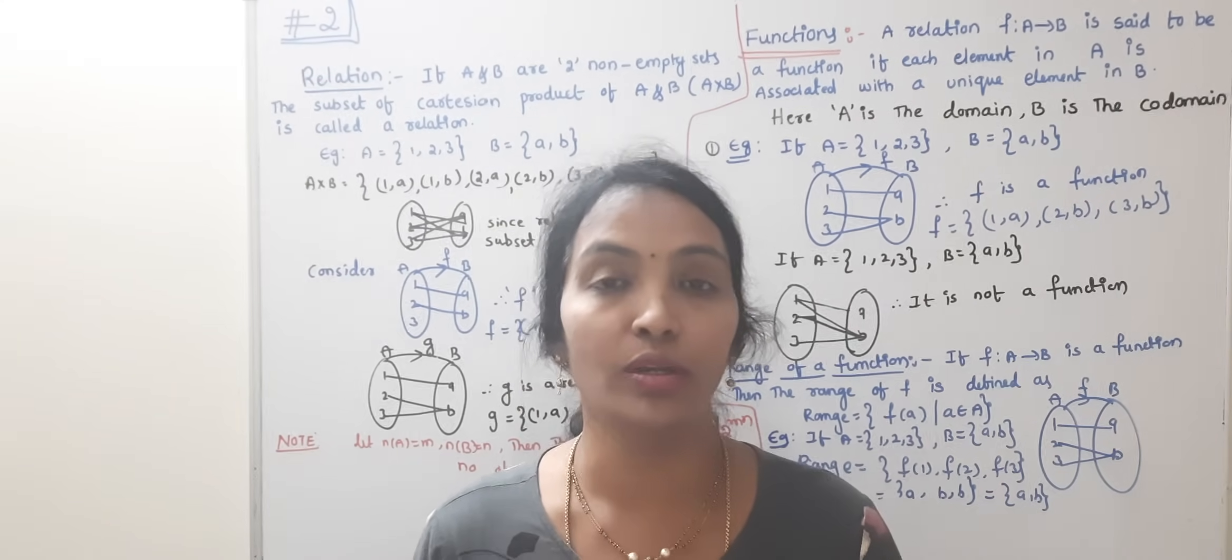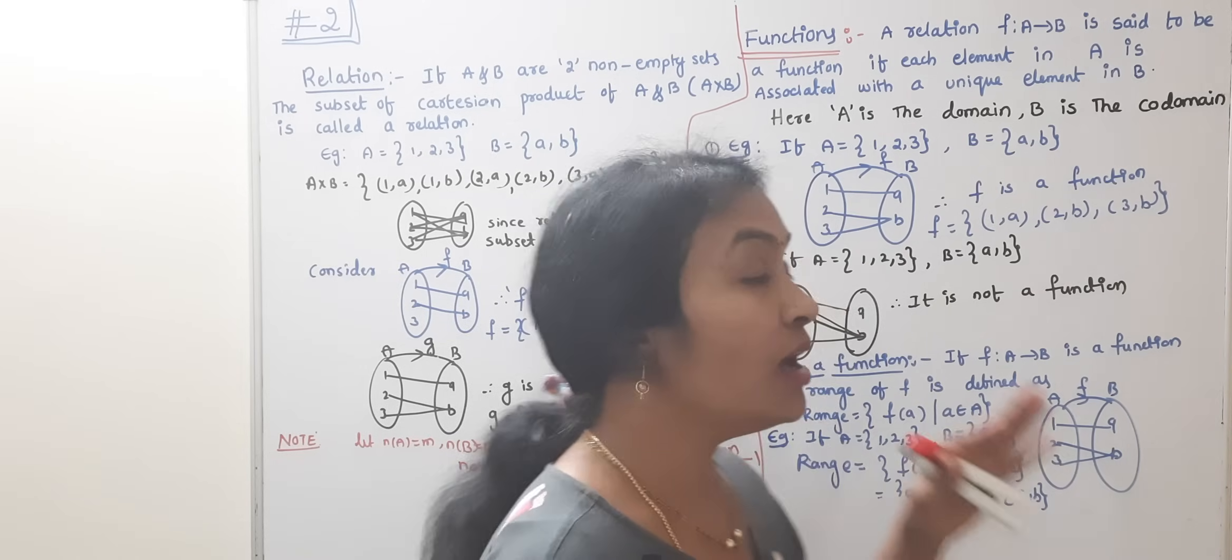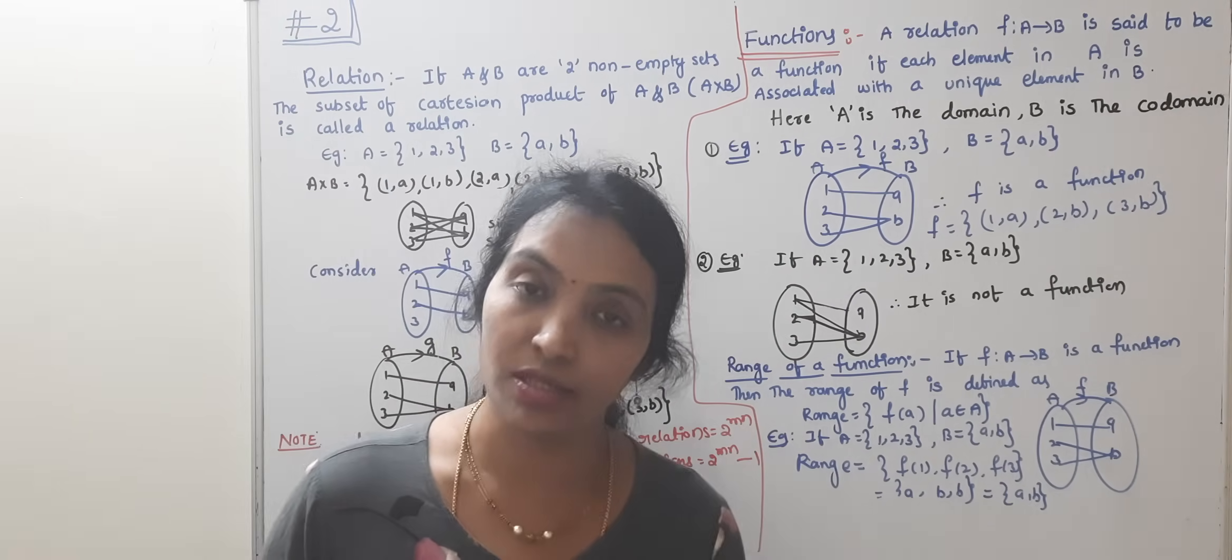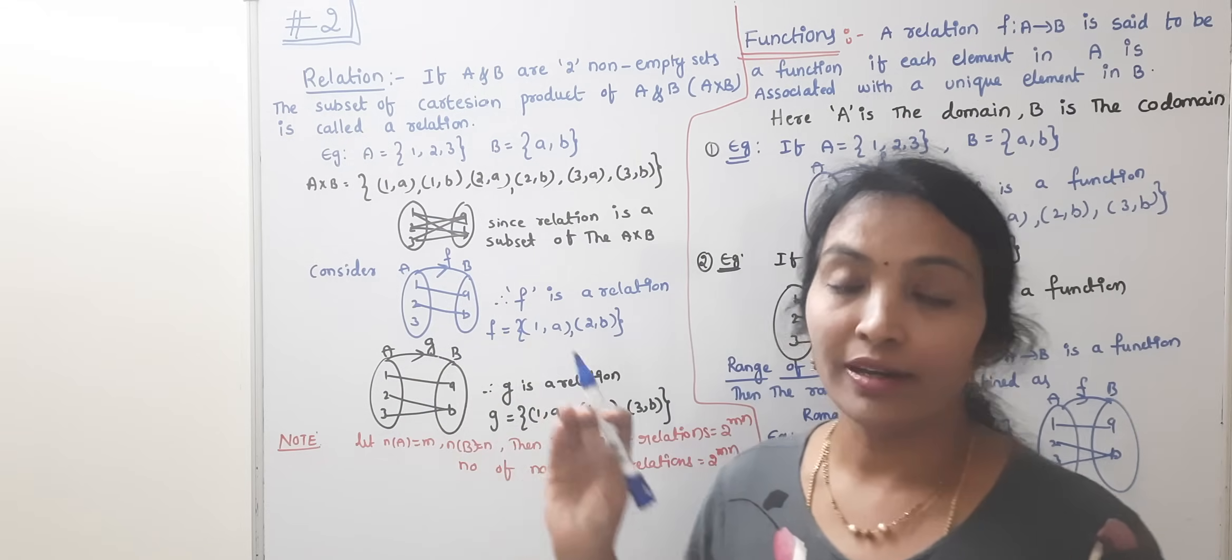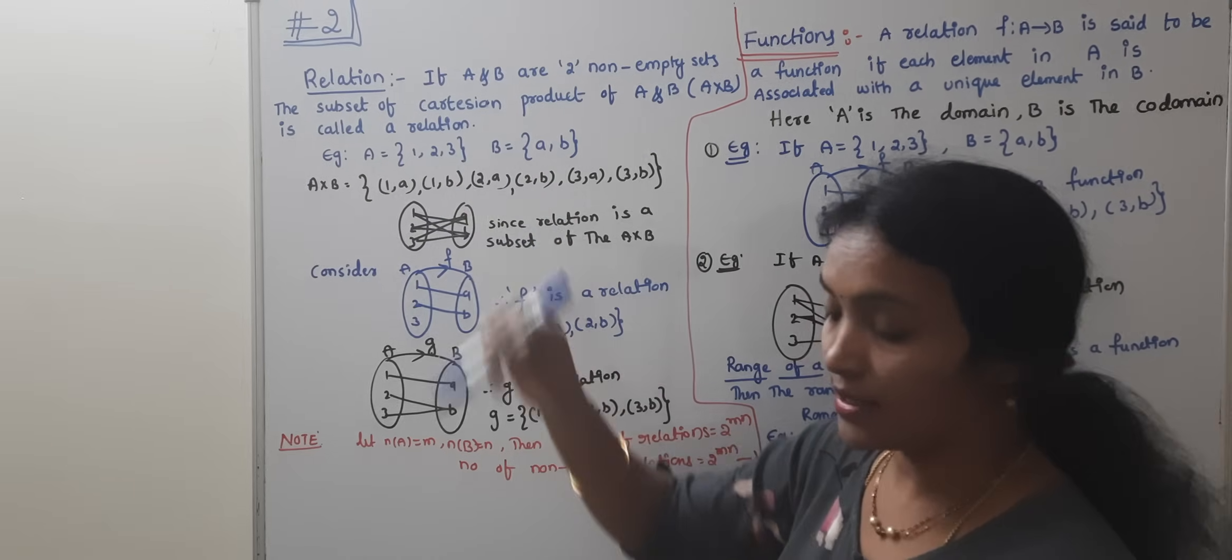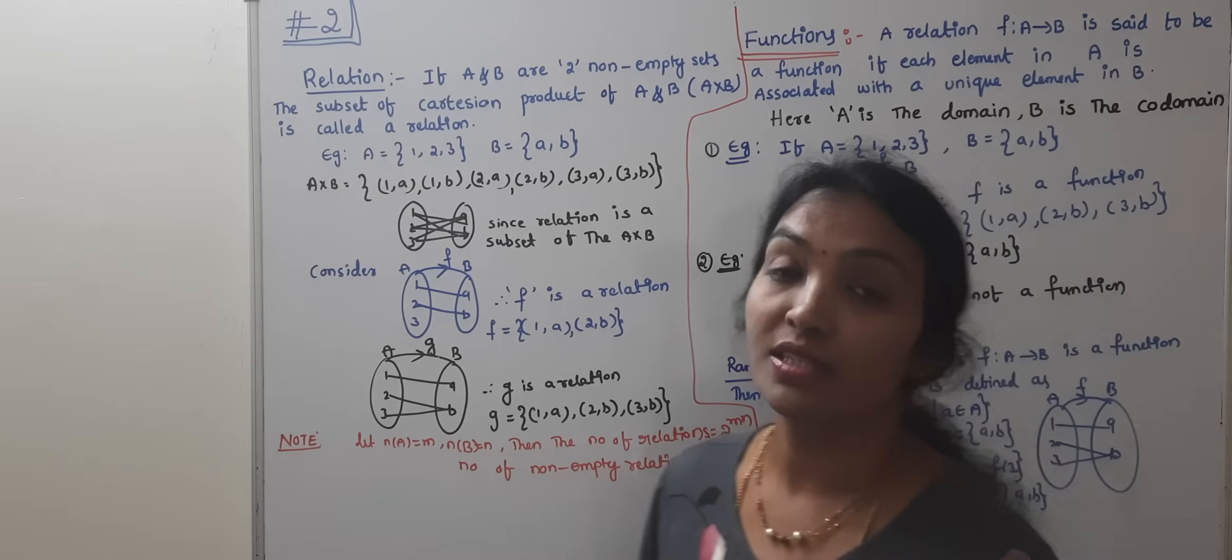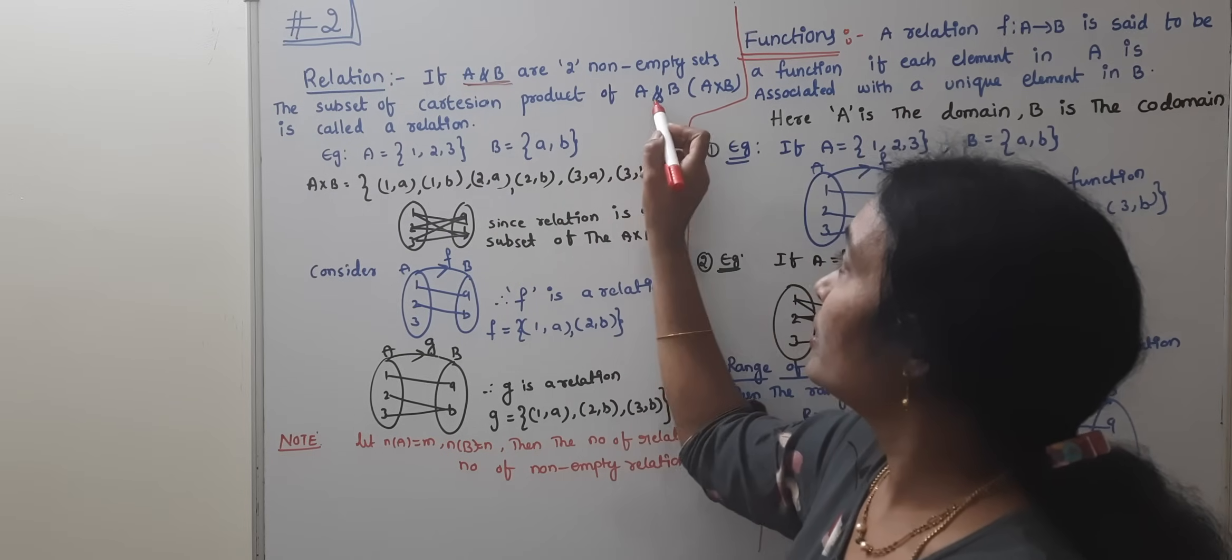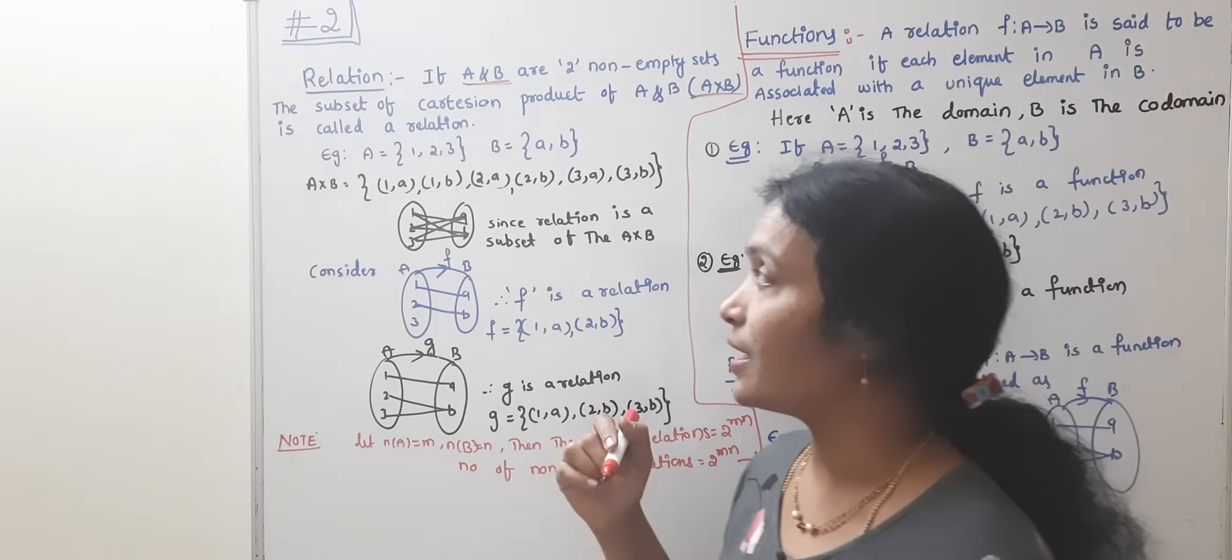What is a relation? Relation is nothing but we already discussed the Cartesian product. If you consider any two sets, A and B are two non-empty subsets. The Cartesian product of A and B is written as A cross B. That is called the relation. It establishes one relation.